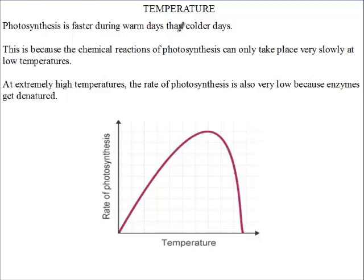During colder days, temperature becomes limiting. It becomes limiting because chemical reactions of photosynthesis can only take place very slowly at low temperatures. So during colder days where temperatures are low, the rate of photosynthesis is very, very low.